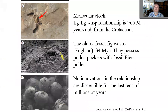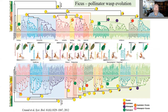This relationship between figs and fig wasps is at least 65 million years old based on the fossil record, and 34 million years ago there is already evidence of active pollination with pollen pockets in fossils. Looking at the fossils, it appears that for at least 10 or perhaps several tens of millions of years, there has been no major innovation — basically the same old system. Looking at pollinator-host evolution broadly, there is generally a one-to-one correspondence: one species of fig has one species of pollinating fig wasp.